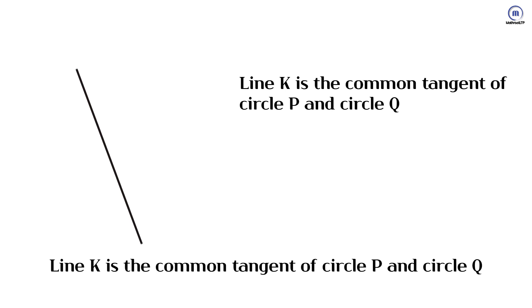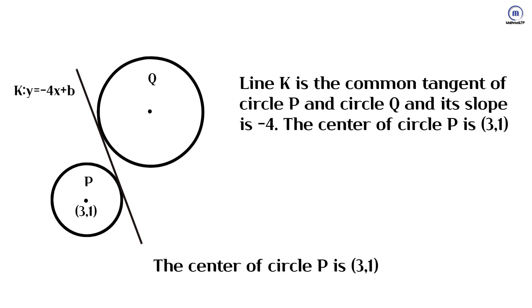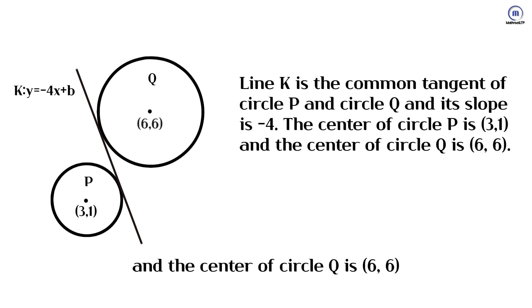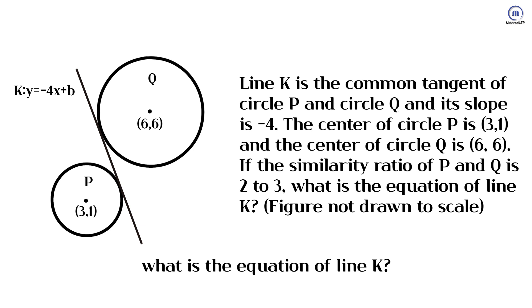Line K is the common tangent of circle P and circle Q, and its slope is negative 4. The center of circle P is (3,1), and the center of circle Q is (6,6). If the similarity ratio of P and Q is 2 to 3, what is the equation of line K?